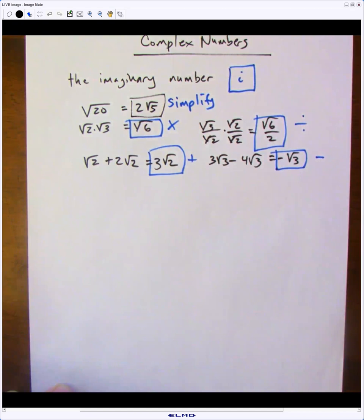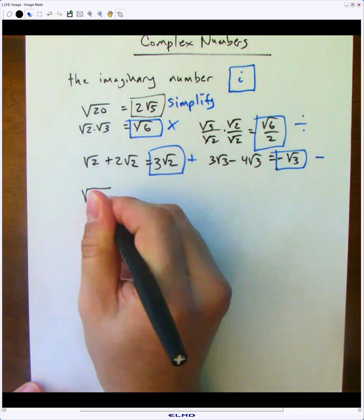However, what would happen if we were faced with a negative value inside the square root, like the square root of negative 4?